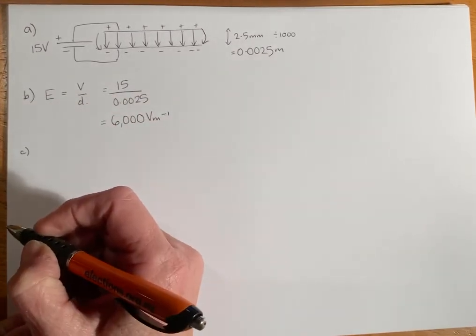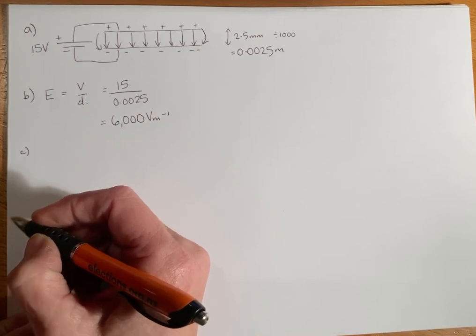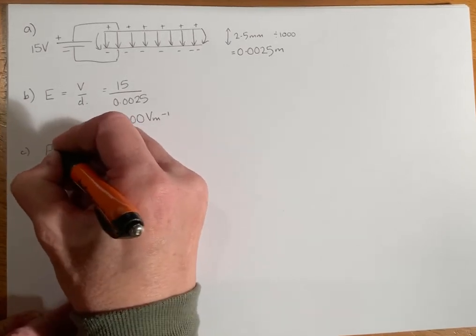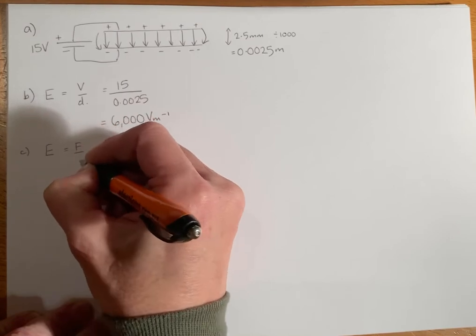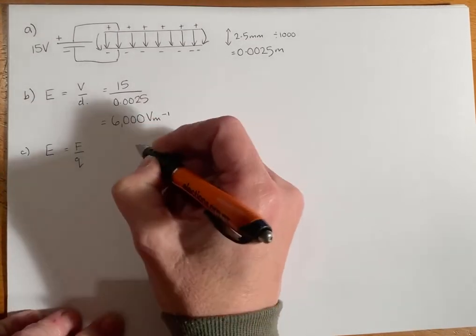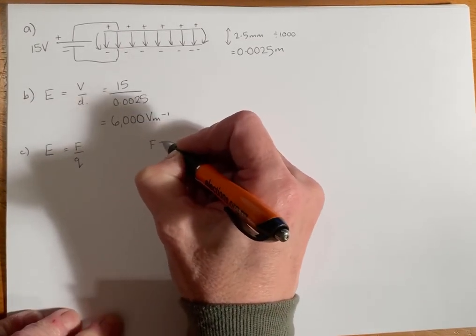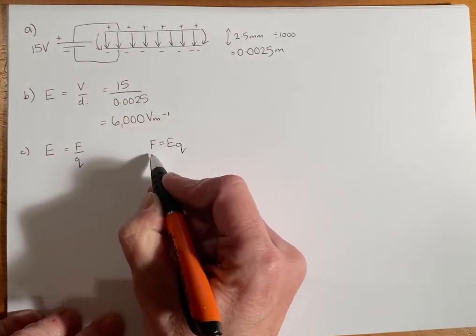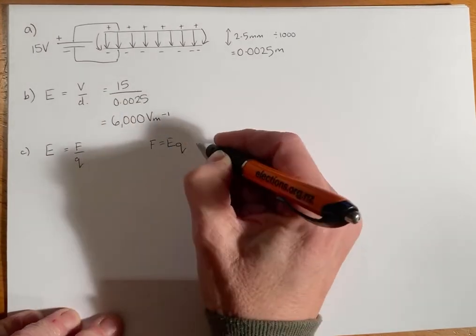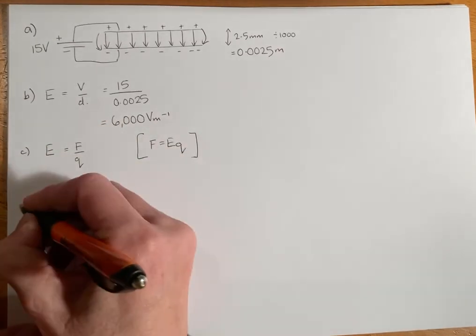Part C asks us what is the other equation for calculating the electric field strength, and it is F over Q. I've just rearranged that from this equation here by taking the Q from this side and dividing, so that's where that one's come from.